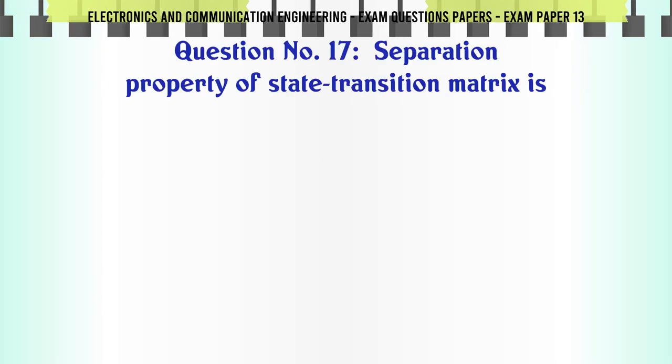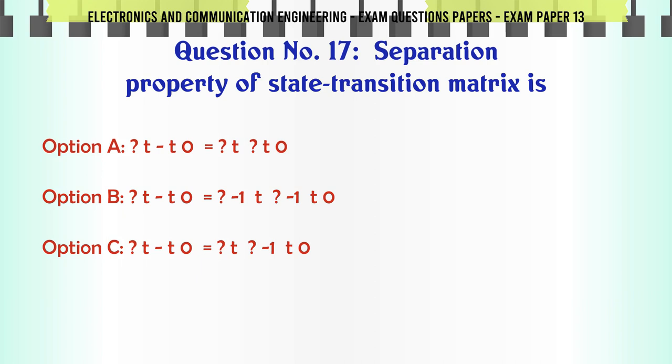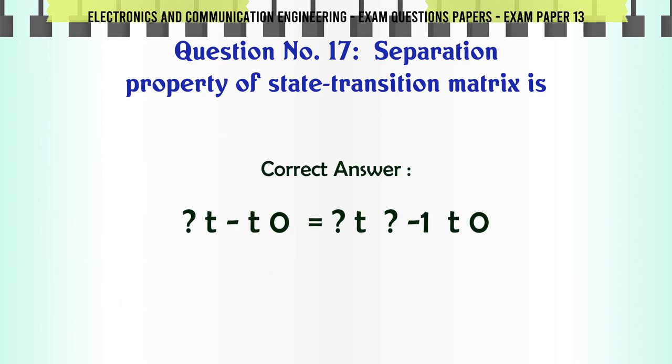Separation property of state transition matrix is: A: phi(T, T0) = phi(T) phi(T0), B: phi(T, T0)^-1 = phi(T)^-1 phi(T0), C: phi(T, T0) = phi(T) phi^-1(T0), D: phi(T, T0)^-1 = phi(T)^-1 phi(T0). The correct answer is phi(T, T0) = phi(T) phi^-1(T0).